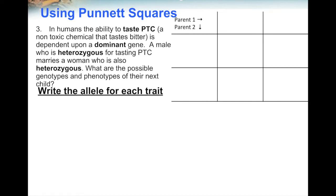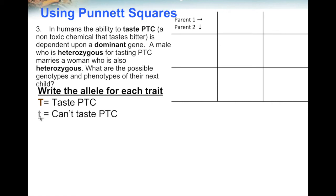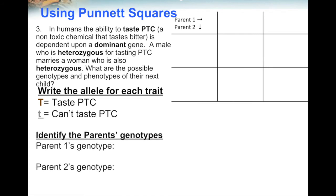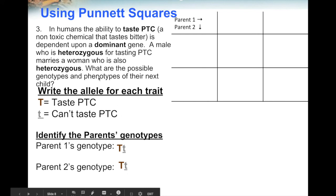First, write the allele for each trait. Since tasting PTC is dominant, it gets a capital letter — let's choose capital T for taste PTC. The recessive trait is not being able to taste PTC, so it gets a lowercase t. Now identify each parent's genotype: both the man and the woman are heterozygous, so they each have a capital T and a lowercase t — two different alleles.